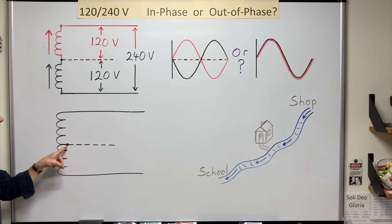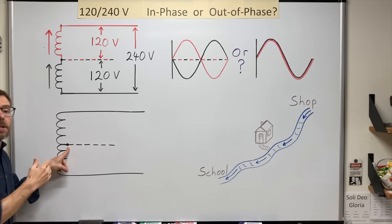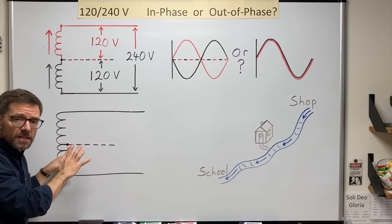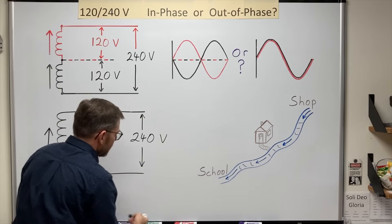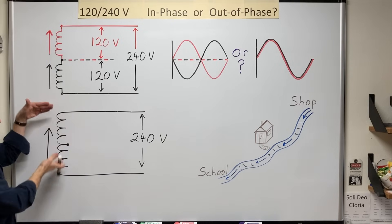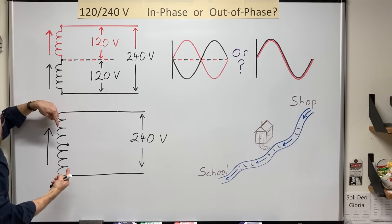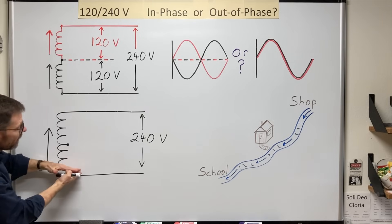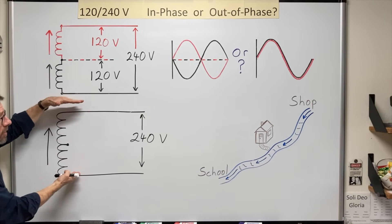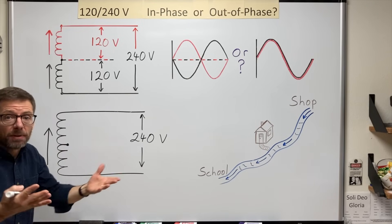Earlier, I mentioned the term center tapped referring to this neutral connection. But there's another phrase that can help us with these systems, split phase. It can help to think of this as a single phase winding with 240 volts induced into it. But how about my 120 volts? Well, in the same way that more turns equals more voltage, fewer turns equals less voltage. So voila, split phase.